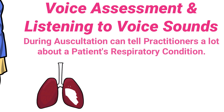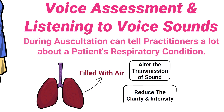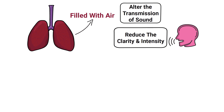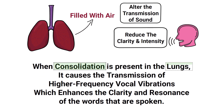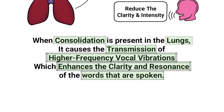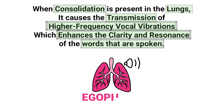Normal lungs that are filled with air alter the transmission of sound and reduce the clarity and intensity of the words that are spoken. However, when consolidation is present in the lungs, it causes the transmission of higher frequency vocal vibrations, which enhances the clarity and resonance of the words spoken. This phenomenon is known as egophony.